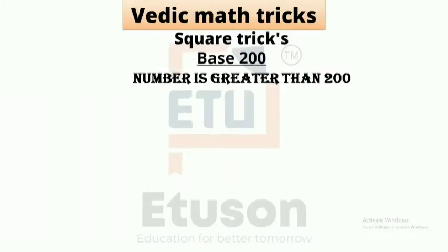Hello guys, welcome to E-Tuition. Today we will learn about square tricks. The base 200 method applies when a number is greater than 200. Let's take an example: 202 squared.